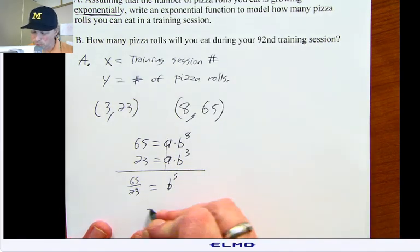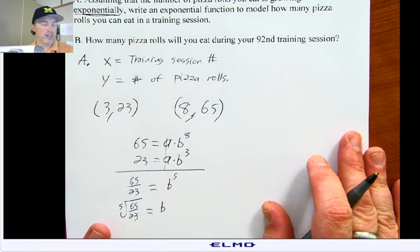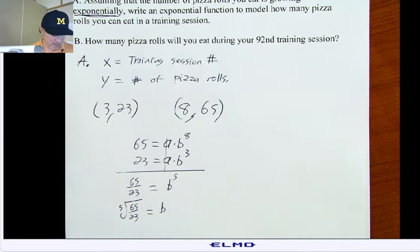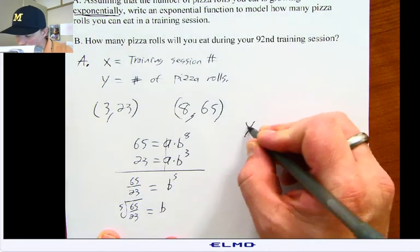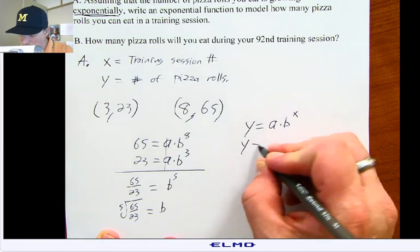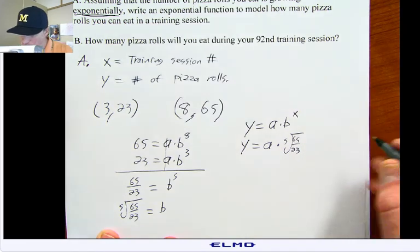And then you do the 5th root, so b is equal to the 5th root of 65 over 23. These problems worked out nicely yesterday. They're not going to work out nicely today. So that is an exact value for b. So I have y equals a times the 5th root of 65 over 23, raised to the x.